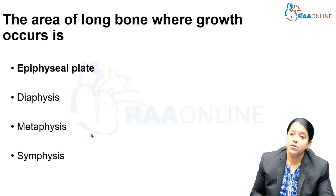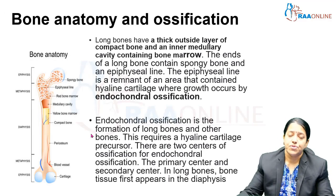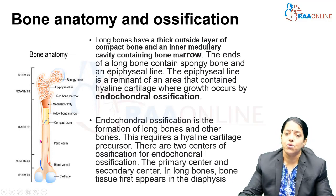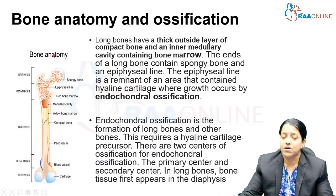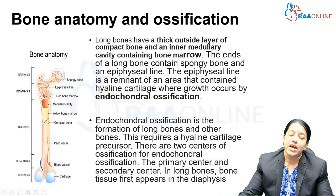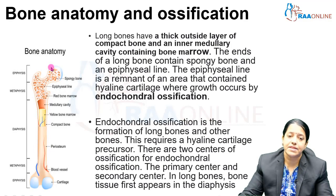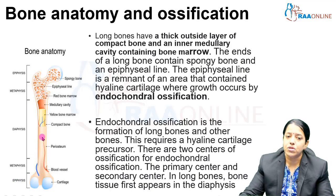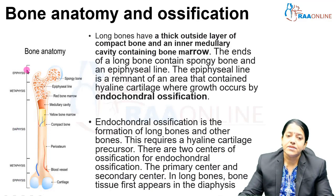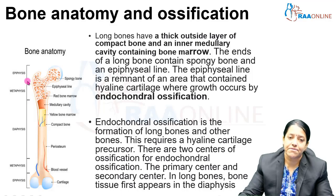Now let's see how the growth of the long bone happens. The ends of the long bone are called the epiphysis. The shaft of the long bone is called the diaphysis, and the junction between the epiphysis and the diaphysis is called the metaphysis.